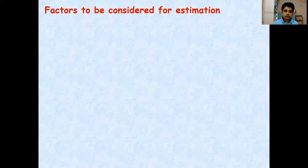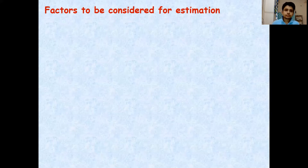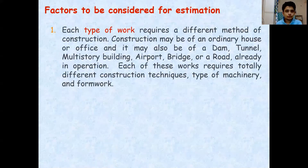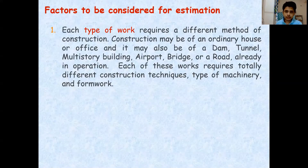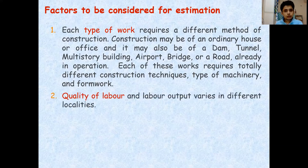Let's discuss the factors to be considered while preparing an estimate. The first thing is: what type of work are we going to do? The estimation process will be different for different types of works — a dam, a tunnel, a multi-story building, a single-story building, an airport, a bridge, etc. Based on the type of work, the materials, equipment, and labor required will all be different.